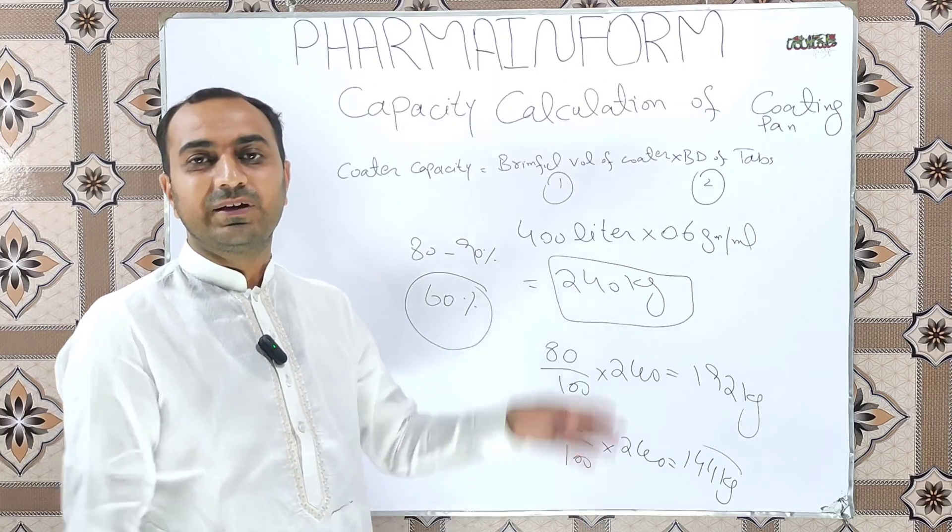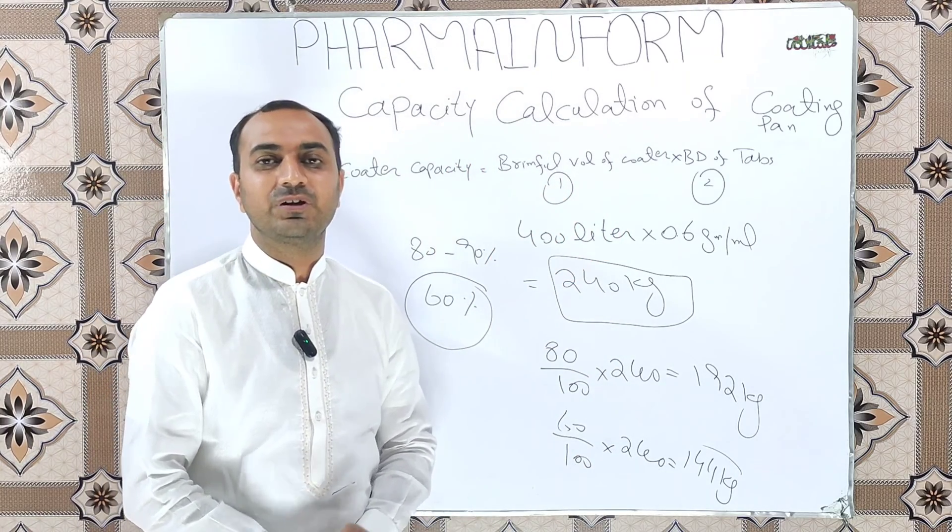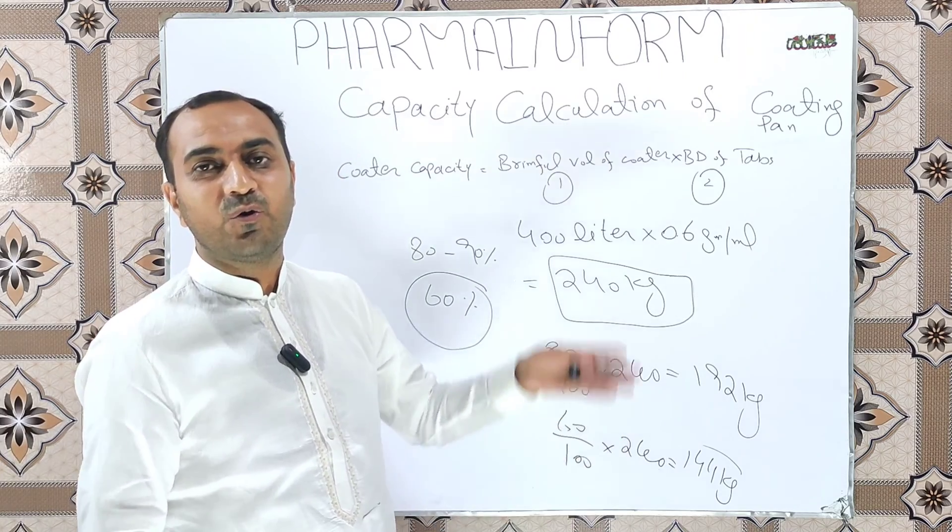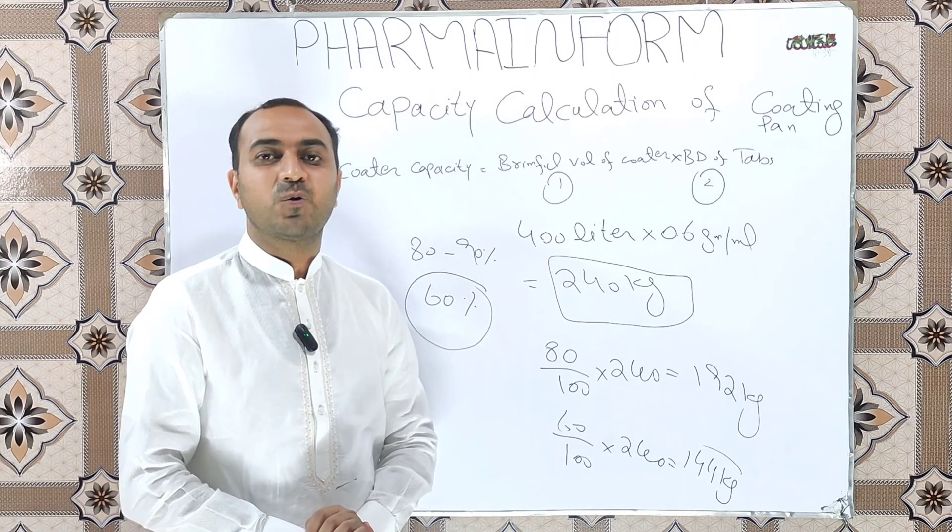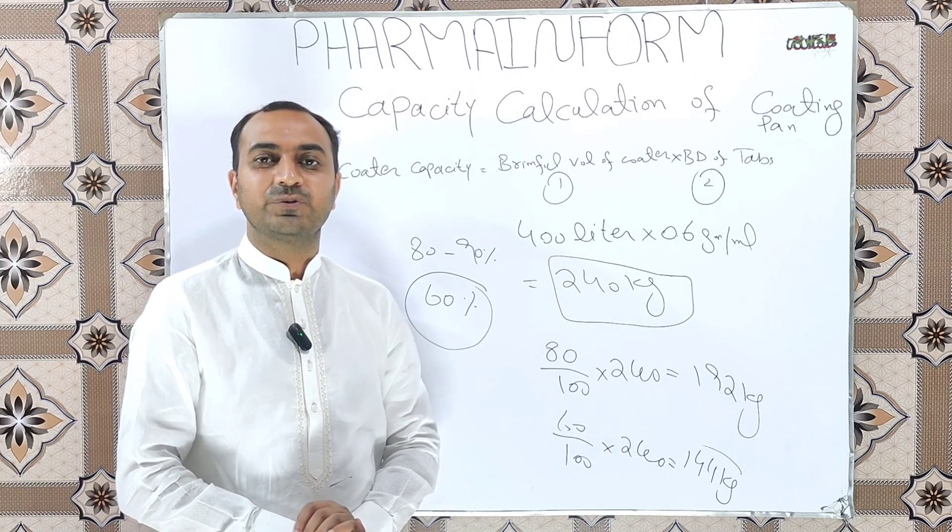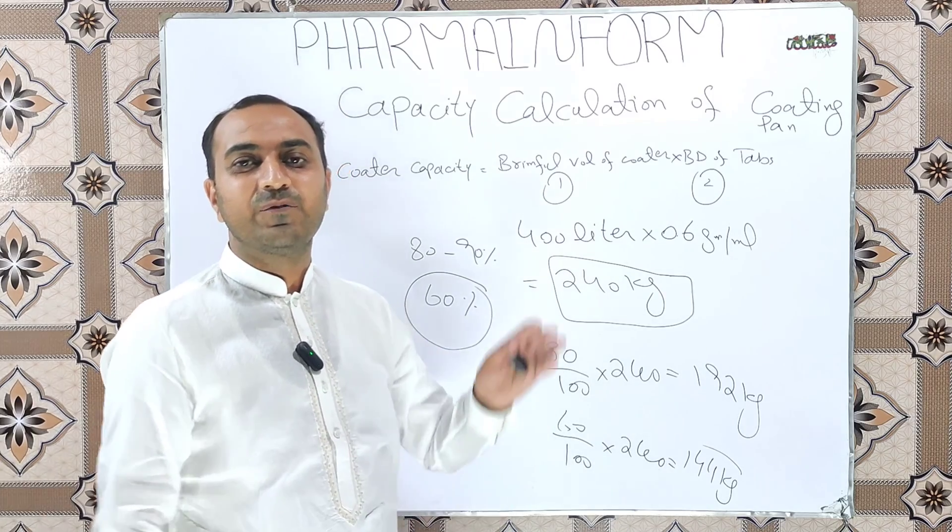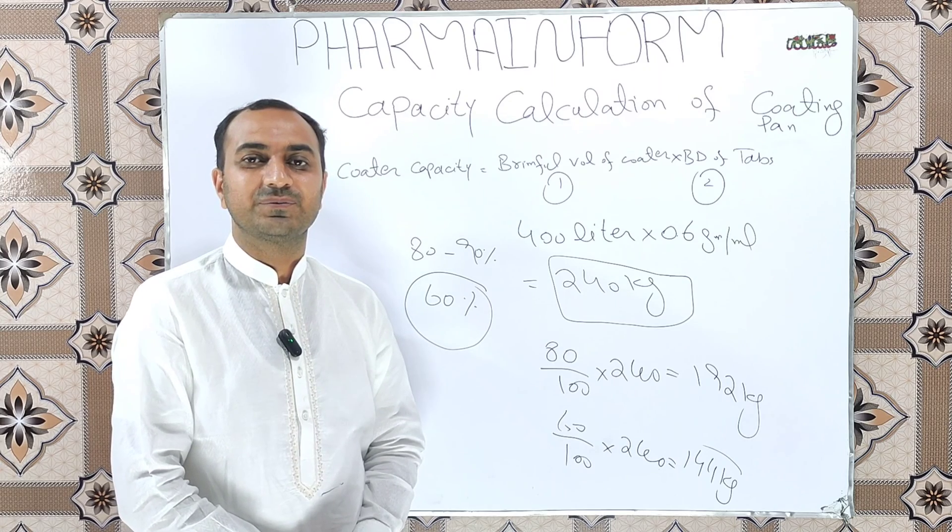So I hope you are now familiar with the capacity calculation of the tablet coating pan. If you have any confusion, you can ask in the comment box and you can also buy the video of the capacity calculation of the rapid mixing granulator and the double cone blender. The link of the videos is provided in the description. You can also visit my website farmandform.com and do subscribe our channel. Till the next video, Allah Hafiz.